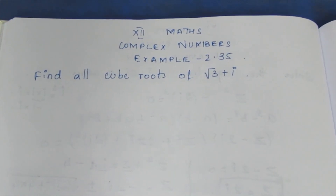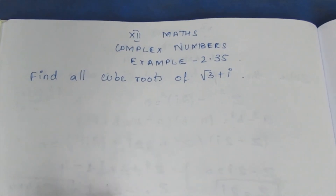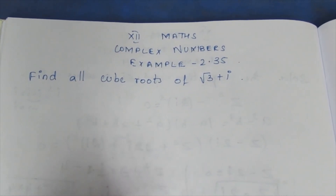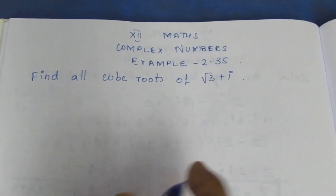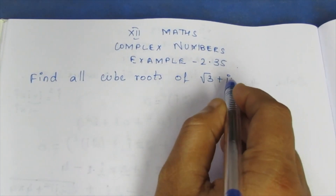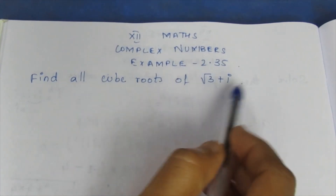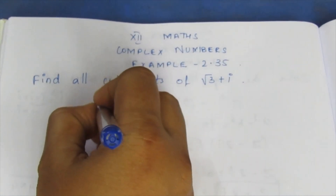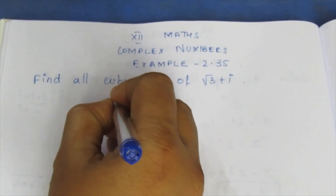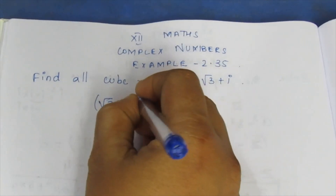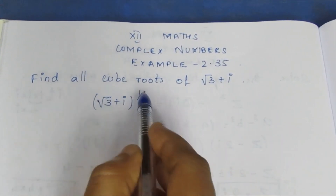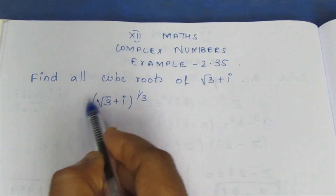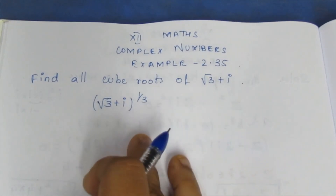Hello viewers. I am Aitli, 12th max complex numbers, Example 2.35: Find all cube roots of (√3 + i). So we need to find (√3 + i)^(1/3), the cube root, which is (√3 + i)^(1/3).